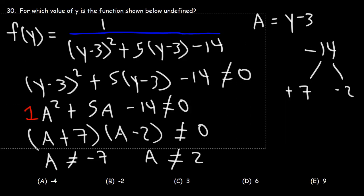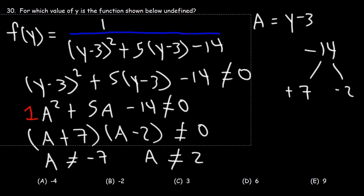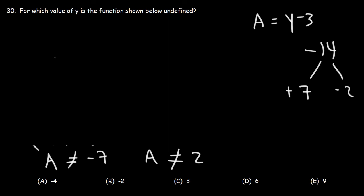So now at this point, what we need to do is replace a with y minus 3. So therefore, y minus 3 cannot equal negative 7 and y minus 3 cannot equal 2.